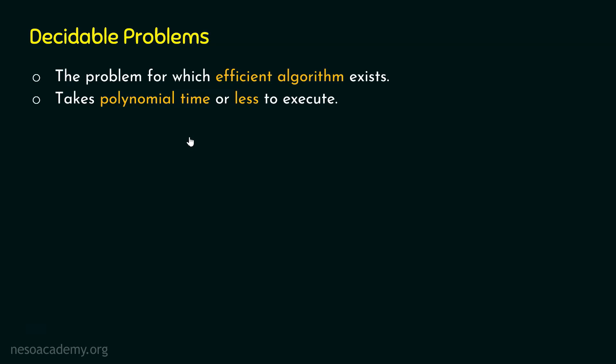Was the bad algorithm really that bad? 8 hours is still a bearable time, and it is actually polynomial time — which makes it an efficient algorithm. So both the good and bad algorithms from the previous lecture are efficient algorithms. In conclusion, not all bad algorithms are inefficient, though generally you will find bad algorithms are inefficient. If an algorithm executes in polynomial time or less, it is considered efficient, and the problem it solves is a decidable problem.